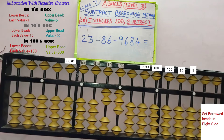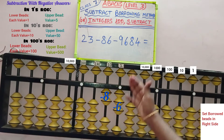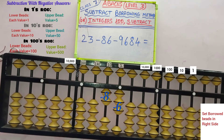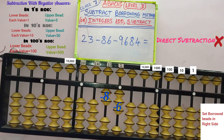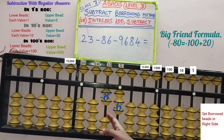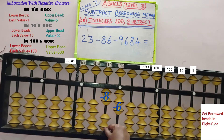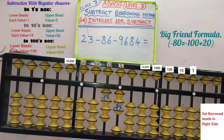Next, second row: minus 86. It means we need to remove 8 beads from the 10's row and 6 beads from the 1's row. First let's do it in the 10's row. See here only 2 beads are available to remove, so direct subtraction is not possible. But big friend is possible because 8's big friend is 2. If we need to do minus 8, we should add 2 here and remove the beads in the next row.